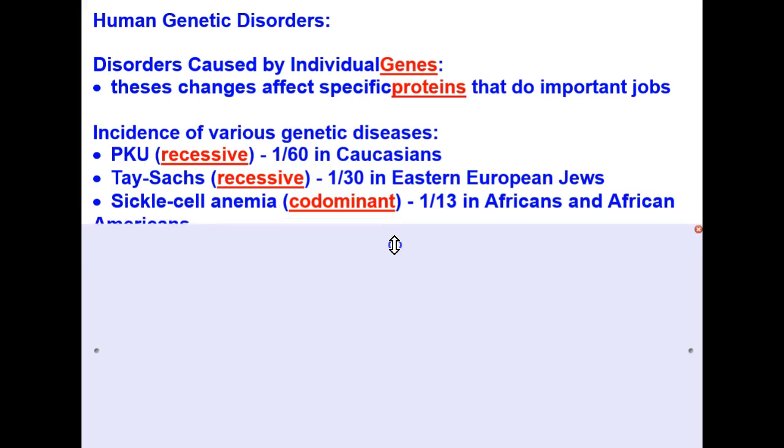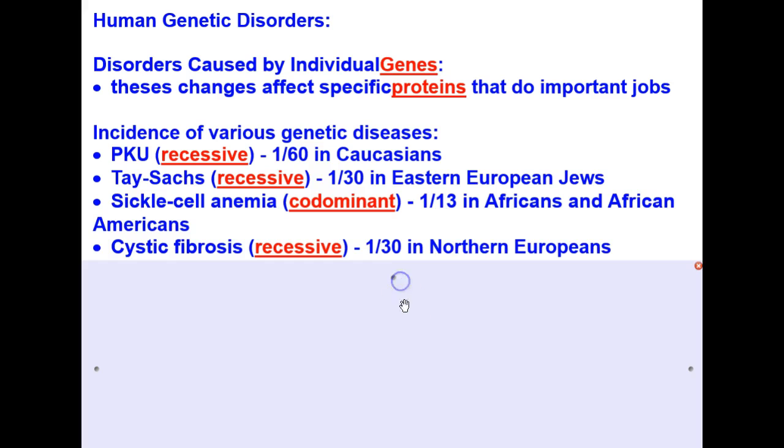We have sickle cell anemia, which is a codominant genetic disease. 1 in 13 Africans and African Americans suffers from sickle cell anemia. Cystic fibrosis, which is a disease that affects the lungs, is recessive and 1 in 30 in Northern Europeans.